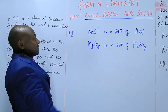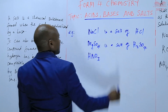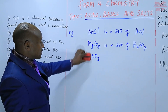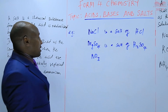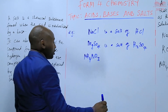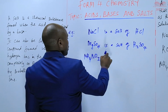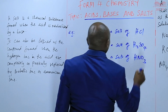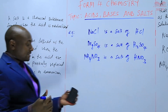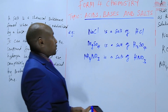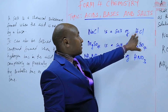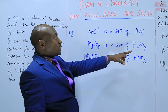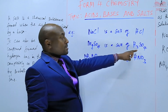And if we have nitric acid and the hydrogen ions in nitric acid are replaced by ammonium ions — it can be either metallic ions or ammonium ions — then we get ammonium nitrate. So ammonium nitrate is a salt of nitric acid. Magnesium sulfate is a salt obtained from sulfuric acid; ammonium nitrate is a salt obtained from nitric acid.